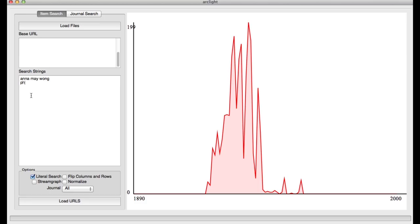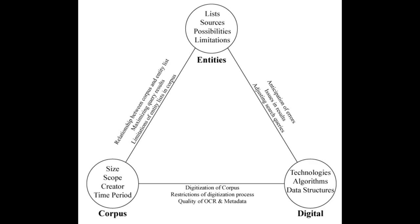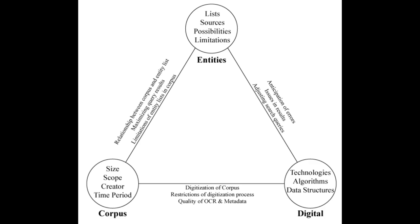While the app produces data and visualizations at amazingly fast speed, we also wanted to make sure we accompany these results with an interpretive framework that helps us remain critical as we search. For this, we offered Scaled Entity Search, or SES, as a method to help better understand and contextualize our searches and results. It focuses on three key elements that shape the processes of the Arclight app: the entities, the corpus, and the digital.